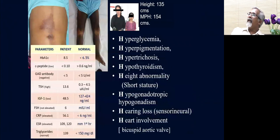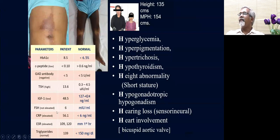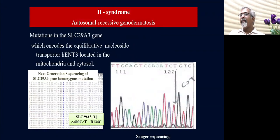A young lady presented with hyperglycemia, hyperpigmentation, hypertrichosis, hypothyroidism, and short stature. Turner syndrome was initially considered due to amenorrhea, but FSH was not classically elevated. She had negative GAD antibodies, low C-peptides, hearing loss, and cardiac involvement with a bicuspid aortic valve. Genetic screening due to this pigmentation identified the H-syndrome, with the classical mutation in the SLC29A3 gene present in her and as a heterozygote in her mother.